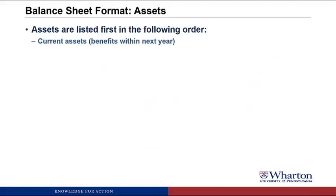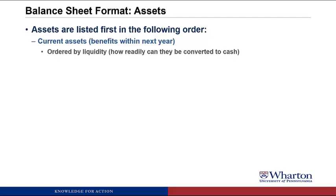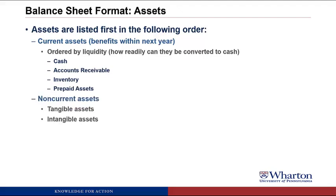For the balance sheet format, assets are listed first in the following order. First, we see current assets — these are assets that will provide benefits within the next year, and they're ordered by liquidity, which is how readily they can be converted to cash. So we always see cash first, then accounts receivable, inventory, and then any prepaid assets, which are just deferred expenses. Then we have non-current assets, including tangible assets like property, plant, and equipment, and then intangible assets, which would be things like software, trademarks, or goodwill from an acquisition.